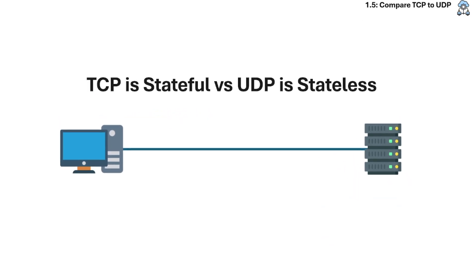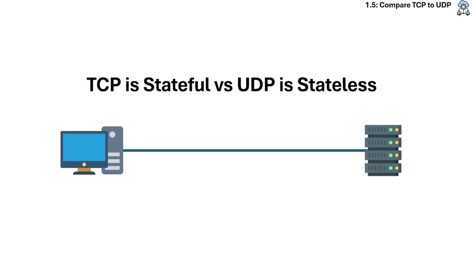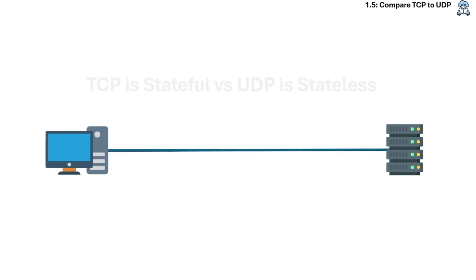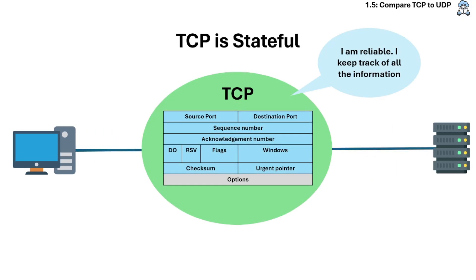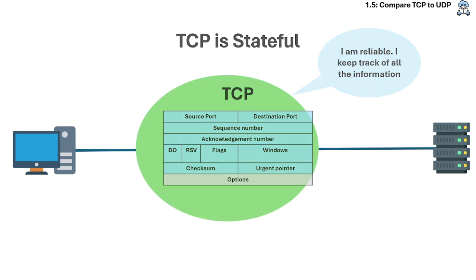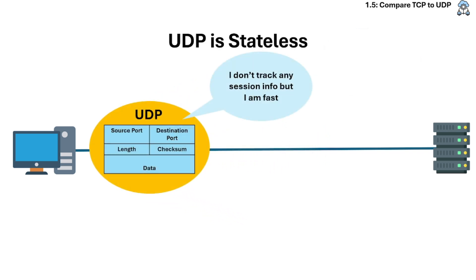Another important distinction: TCP is stateful and UDP is stateless. TCP maintains the connection state, keeps track of session information, and the server remembers the client between packets. It uses more memory and CPU but enables reliable sessions. For UDP, no session information is tracked — each packet is treated independently. The server doesn't track what it previously received from the client. It uses less memory and is much faster, but not reliable.